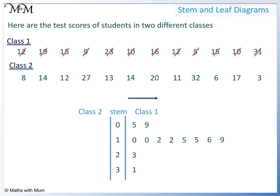Now we plot the class 2 data on the other side. This time, the values get larger as we go left — we always start at the stem and get larger as we move outwards.